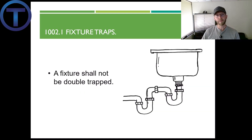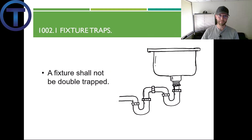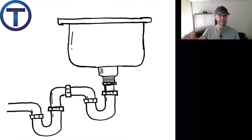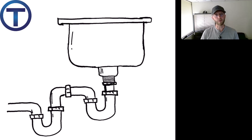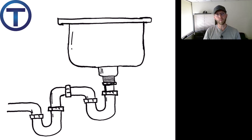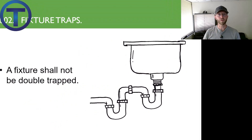Another requirement is that fixtures shall not be double trapped. This is only done by people who don't know what they're doing. Please don't do this because you're a plumber and you know better — one trap per fixture, don't double trap.